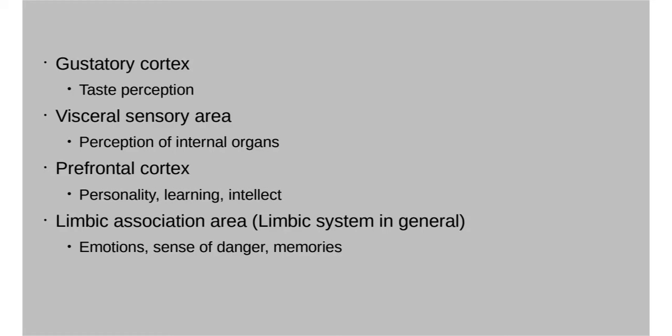The limbic association area, or limbic system, is responsible for your emotions, memories, and your sense of danger. It's located right at the top of your brain stem where it connects to your cerebrum.